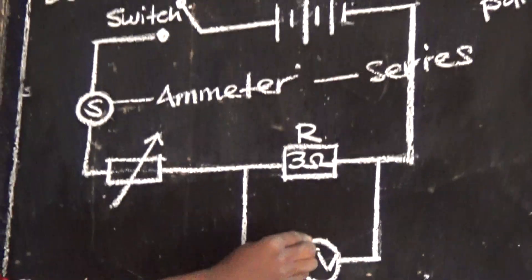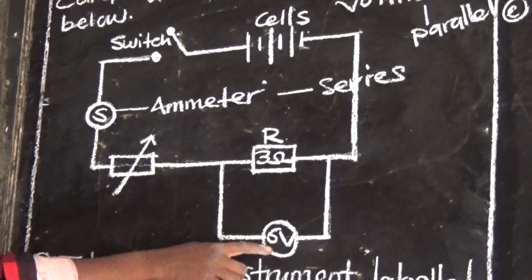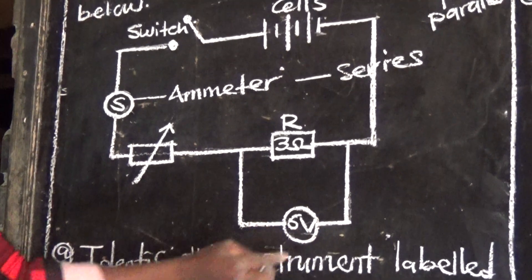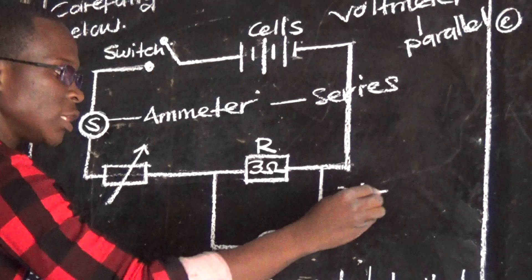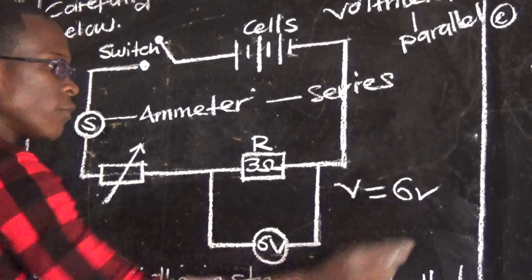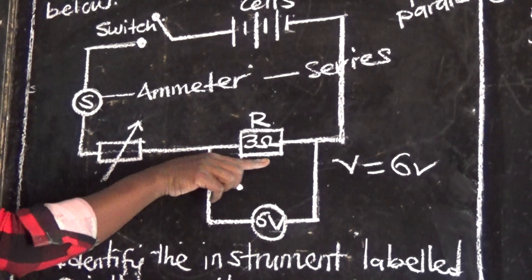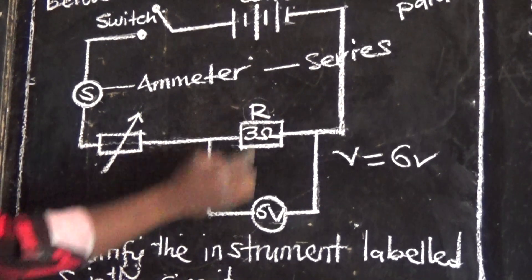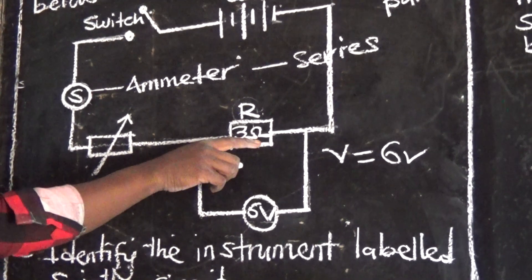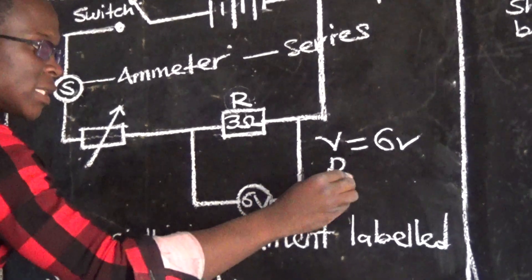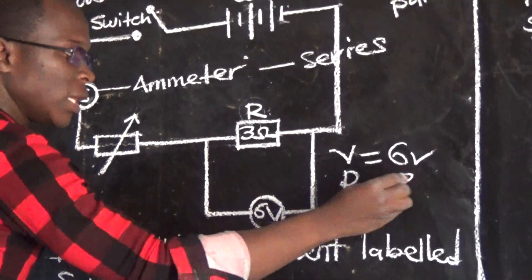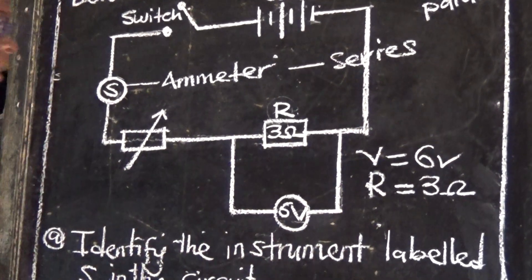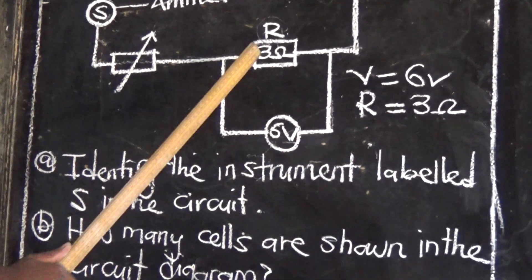The voltmeter reads 6 volts, meaning that is the total voltage. So our voltage is 6 volts. Then we have this resistor — it is written 3 ohms, meaning the resistance for the circuit is 3 ohms. The voltage is 6 volts and the resistance is 3 ohms.